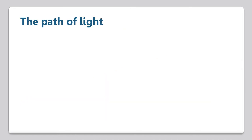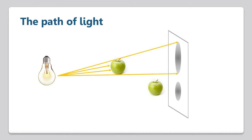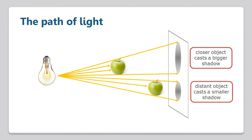The ray model of light also explains how the distance between an object and a light source affects the size of its shadow. If we take two apples and place them at different distances between a light and a wall, we can see the shadows are different sizes. Because light spreads out from its source, the rays are more closely bunched near the light. So the apple closest to the light is able to block more rays, therefore creating a bigger shadow. Further away from the light, rays are more spread out, so the more distant apple will block fewer rays, causing a smaller shadow.